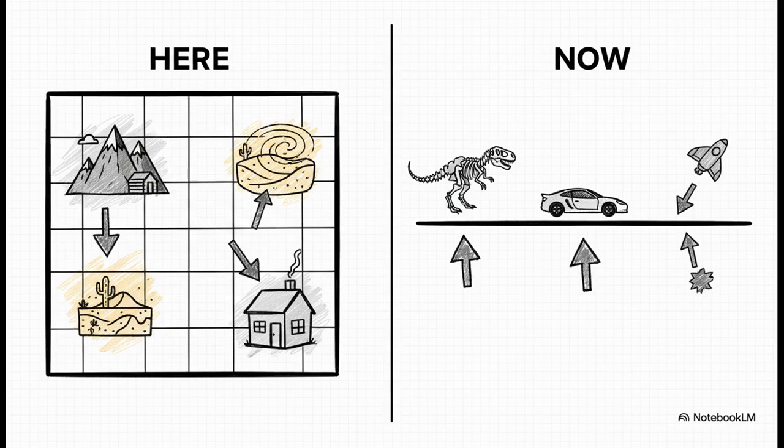And this gets to one of the weirdest parts of the whole theory. We all feel like now is special, right? Like it's the leading edge of reality. But in the block universe, now isn't special at all. It's just a label for your location in time, the same way the word here is a label for your location in space. If I say I'm here, it just means my position. If you, somewhere else, say you're here, you're also right. Well, now is the same thing. For Julius Caesar, his now was just his location in time. From the universe's perspective, his now is just as valid as our now. There's no single privileged universal moment of now.